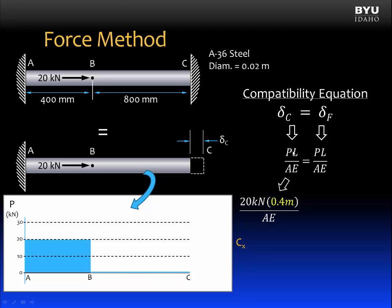So we will expand our PL over AE equation as follows. P is equal to 20 kilonewtons. The length is the length over which that 20 kilonewtons is acting. And that's from A to B. That's 400 millimeters or 0.4 meters. A and E, we'll just leave in that form. Now let's expand this equation.